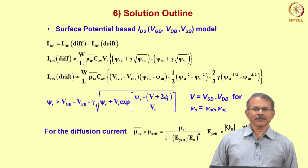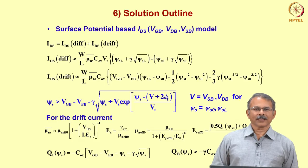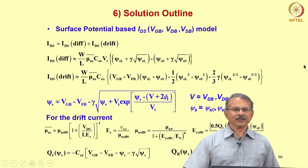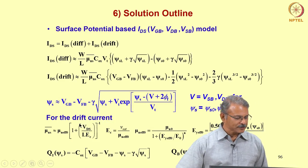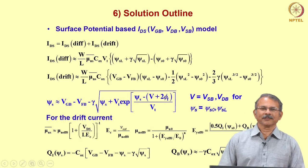For the diffusion current, the average surface mobility is given by a particular formula in terms of the surface potential at the source. For the drift current, you have a somewhat longer expression for the average surface mobility, and this average surface mobility depends on the drain-to-source voltage.